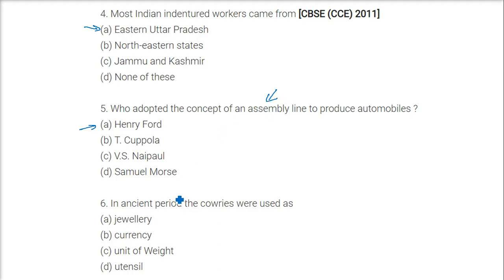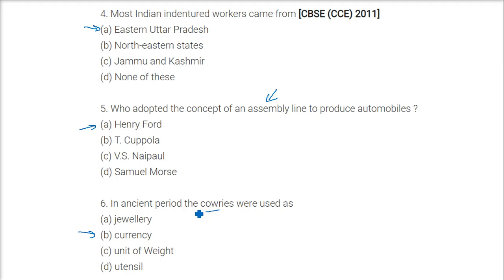In ancient times, cowries were used as currency. These cowries belong to the Maldives — they are shells found on the shores of the Maldives that were used as a form of currency.